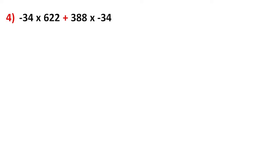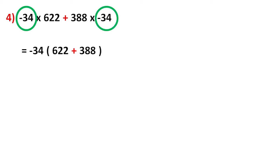Next we are taking integers. The question is −34×622 + 388×(−34). From the question itself you can understand that −34 is common. So take −34 outside. The remaining numbers are 622 and 388; in between, addition comes, so we add: 622 + 388 = 1000. So it becomes 1000×(−34) = −34,000.